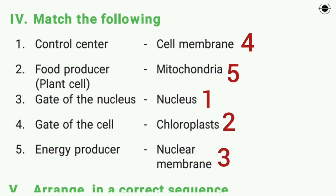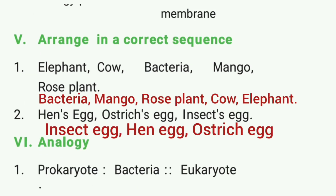Then match the following. First one: control center — the answer is nucleus. Second one: food producer — the answer is chloroplast. Third one: gate of the nucleus — the answer is nuclear membrane. Fourth one: gate of the cell — the answer is cell membrane. Fifth one: energy producer — the answer is mitochondria.